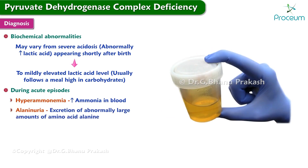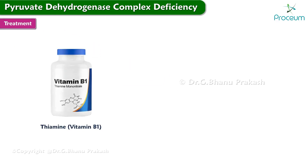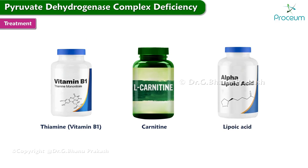Excretion of abnormally large amounts of the amino acid alanine may occur only during acute episodes. The treatment of PDCD is as follows: some affected individuals respond to treatment with thiamine or vitamin B1, carnitine, or lipoic acid. Thiamine may need to be given in high doses to be effective.